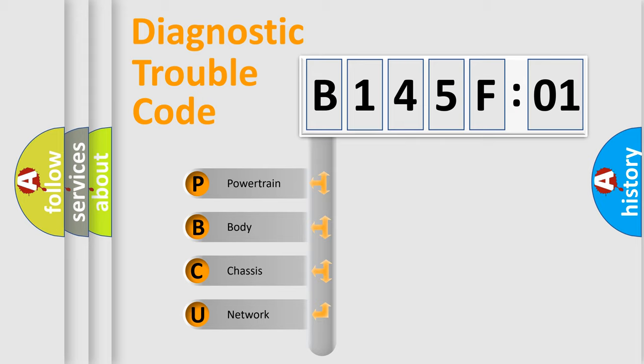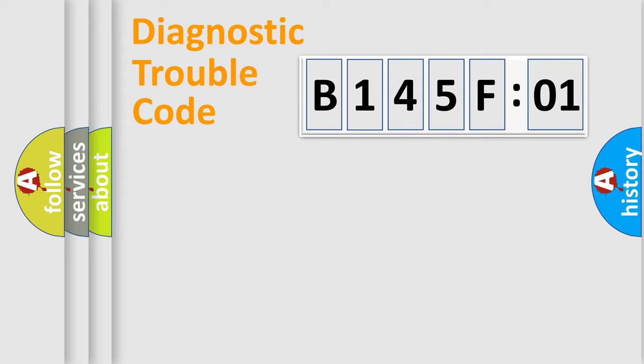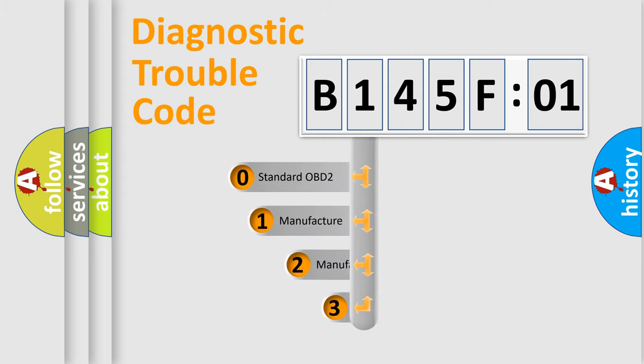We divide the electric system of the automobile into four basic units: Powertrain, Body, Chassis, and Network. This distribution is defined in the first character code.